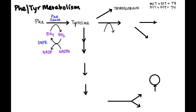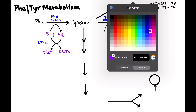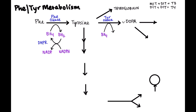Another thing tyrosine can do is start the process of catecholamine synthesis. Tyrosine gets hydroxylated by the enzyme tyrosine hydroxylase, which makes levodopa (DOPA). Tyrosine hydroxylase uses the same cofactor BH4 as phenylalanine hydroxylase, and it also uses dihydrobiopterin reductase (DHBR) and NADPH in the same way.